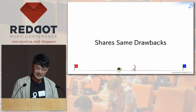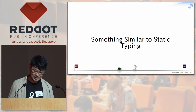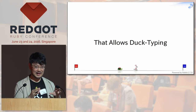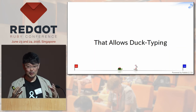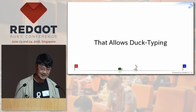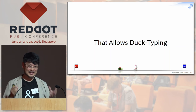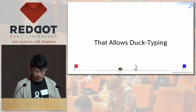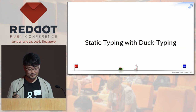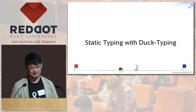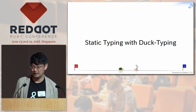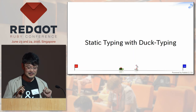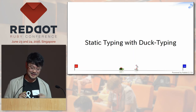So what we want is something similar to static typing but that allows duck typing. Duck typing is very important policy and very important in Ruby — we want to keep that. But static typing is good, especially compile-time checking is pretty nice. So what shall we do? Static typing with duck typing. I looked at many programming languages — I'm a programming language geek. There is a language with static typing and duck typing, which is Go.